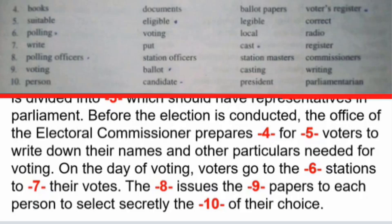On the day of election, voters go to the DASH stations. Options: A. polling stations, B. voting station, C. local station, D. radio station. The correct answer is A — voters go to the polling station. To DASH their votes — options: A. to write their votes, B. to put their votes, C. to cast their votes, D. to register their votes. The correct answer is C — to cast their votes.